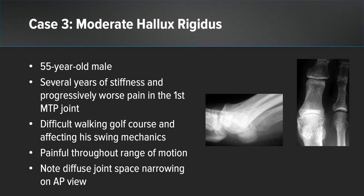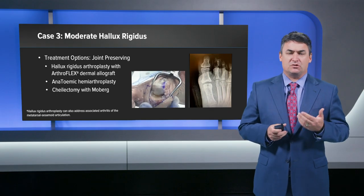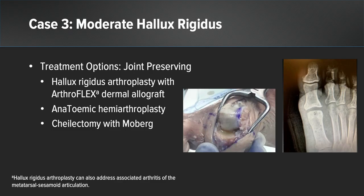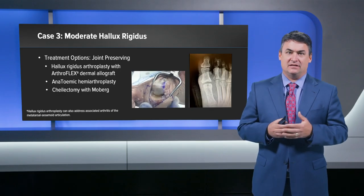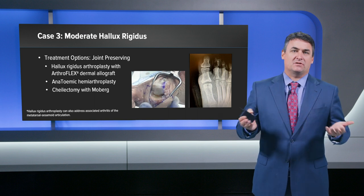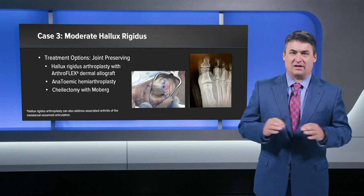Case three is a 55-year-old male with several years of stiffness and progressively worsening pain at the first MTP joint. He's having difficulty walking, difficulty playing golf due to swing mechanics, and is painful throughout his range of motion. X-rays show diffuse joint space narrowing on both AP and lateral views. Joint-preserving treatment options include hallux rigidus arthroplasty with Arthroflex, anatomic hemiarthroplasty, or a chylectomy with a Moberg. Notably, the hallux rigidus arthroplasty with Arthroflex also addresses sesamoid articulation, covering both medial or lateral sesamoid pain and arthritic MTP pain.